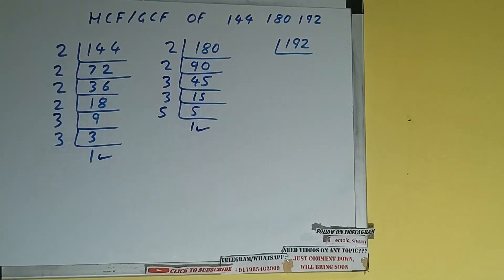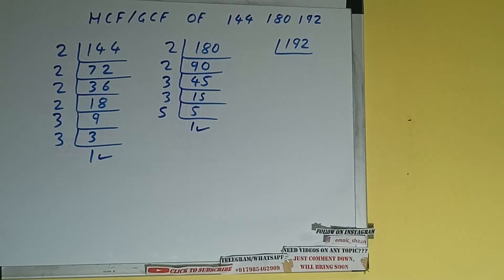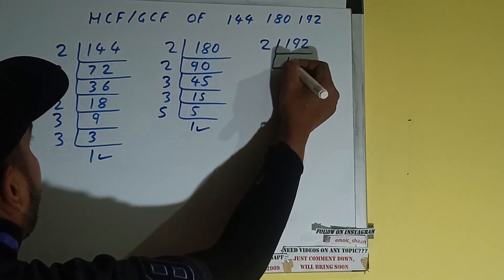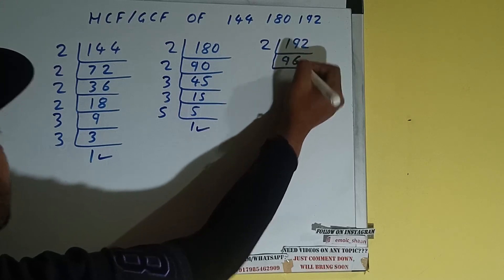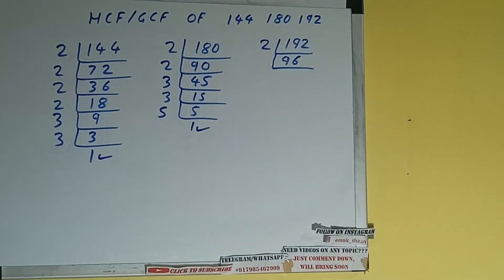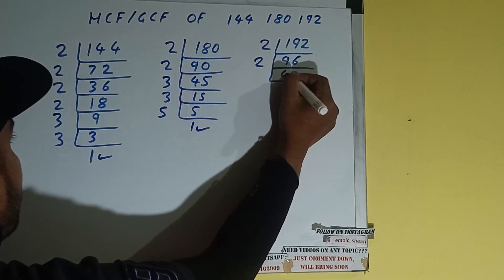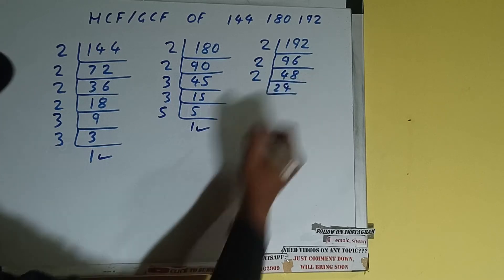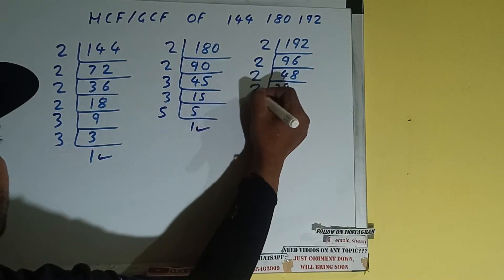Now the same thing we need to do with the number 192. Is 192 divisible by the lowest prime number 2? Yes it is, because the number is even, so divide it and we'll get 96. Is 96 again divisible by 2? Yes it is, and we'll get 48, which is again divisible by 2, giving us 24.